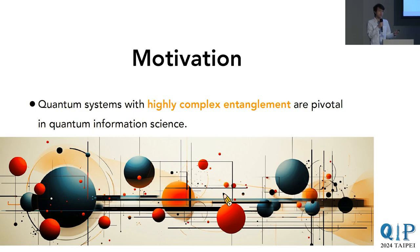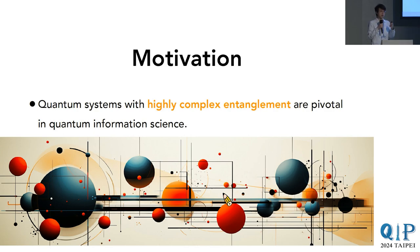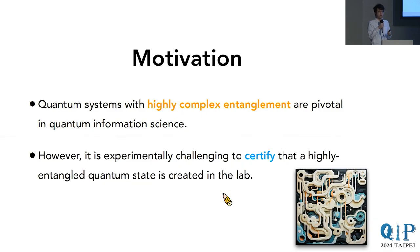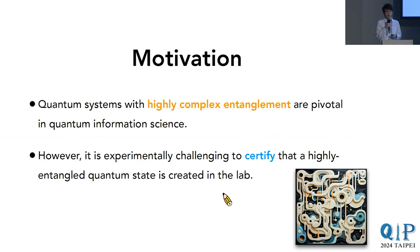As we all know, being able to create quantum systems with highly complex entanglement is very important in quantum information science. It allows us to perform classically hard computation and gain advantage in sensing about different aspects of the universe. However, at the same time, experimentally certifying if we have created a highly entangled quantum system is still very challenging. In today's talk, I will be discussing some of the recent progress in understanding this question.